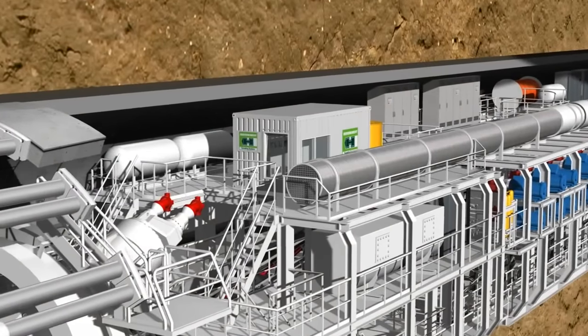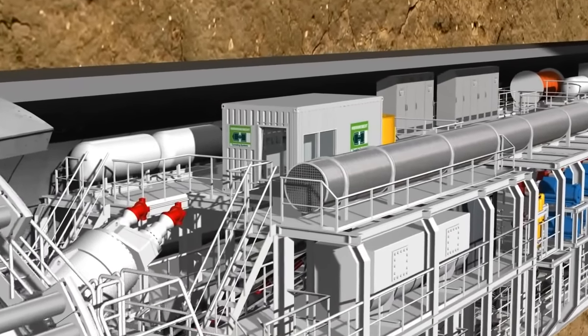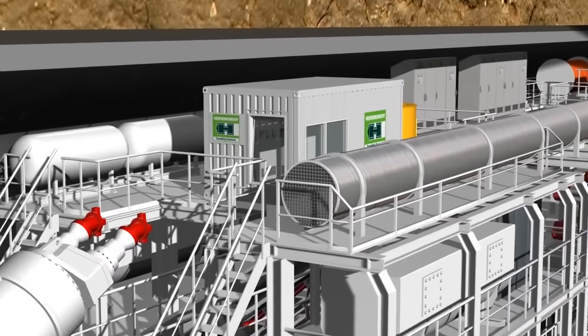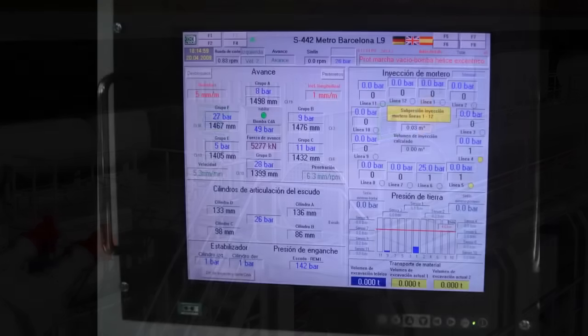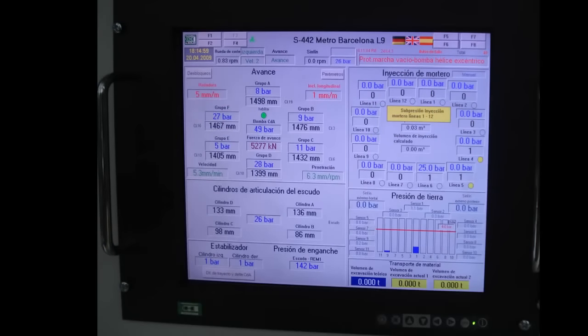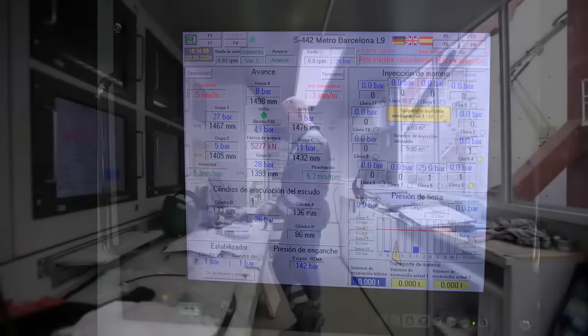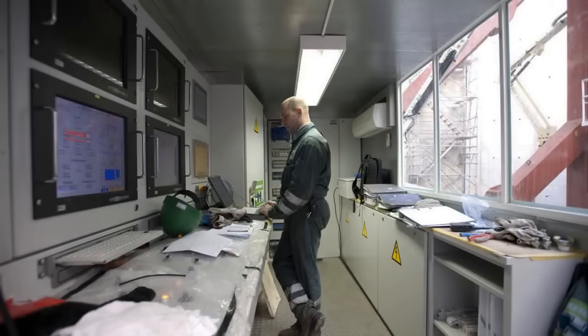All important data and up to date tunneling parameters are gathered together in the central control cabin. There, they are visualized on monitors and made available to the machine operator. The operator can monitor the largely automated process and intervene if necessary.